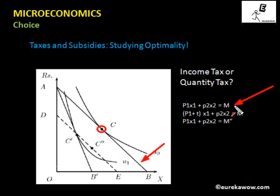Essentially, the quantity tax increases the price of good one. The price of good one becomes P1 + t, where P1 is the price paid to the producer and t is the amount paid to the government. As a result, the budget line becomes (P1 + t)·X1 + P2·X2 = M, and the budget line swivels inwards because the price of good one has increased from P1 to P1 + t.